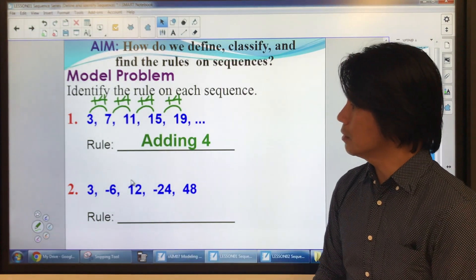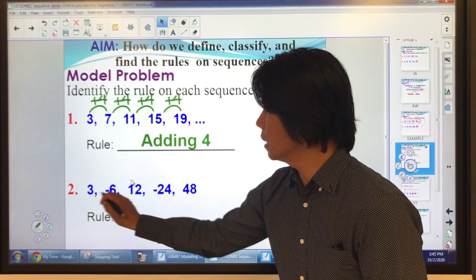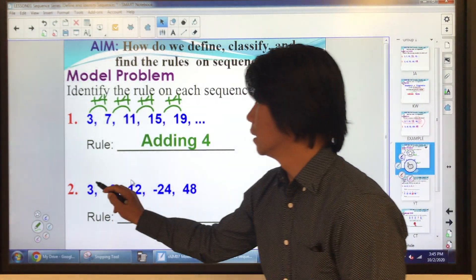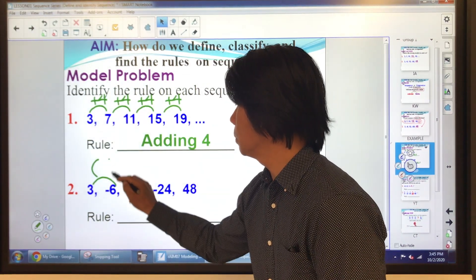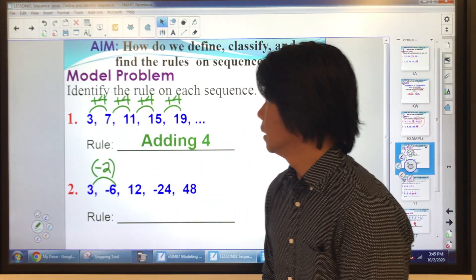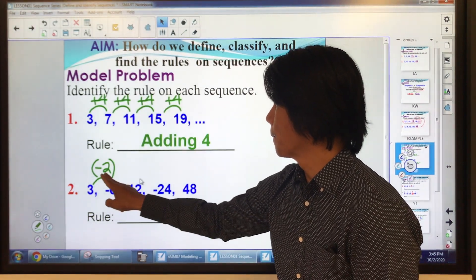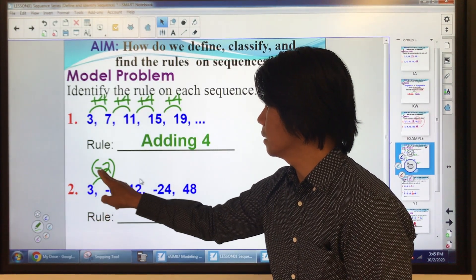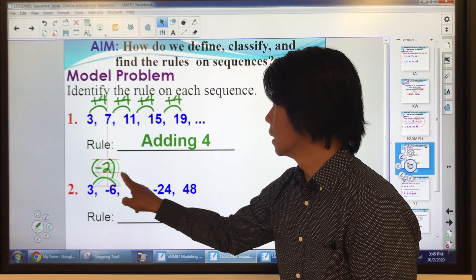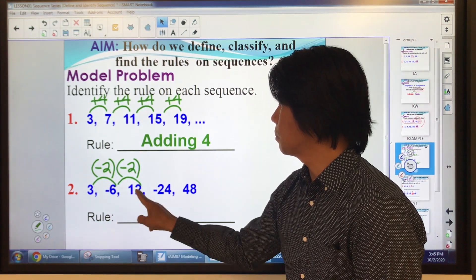How about number two? What do you do to three to get negative six? You just simply multiply this by negative two. Let's verify. So three times negative two is negative six. Times negative two, that's positive 12.